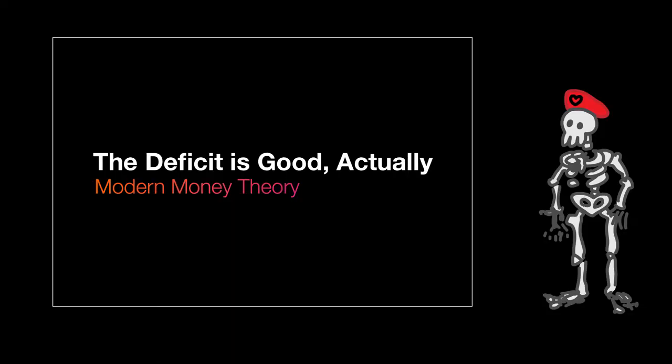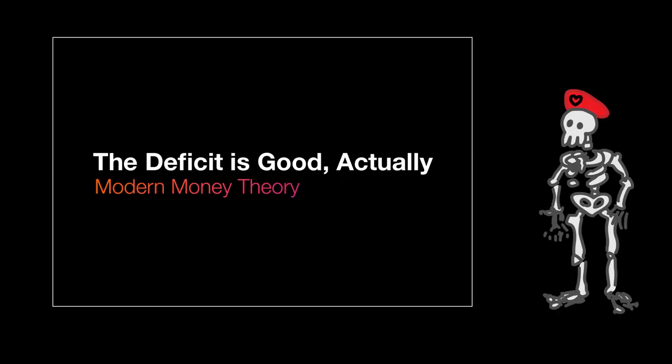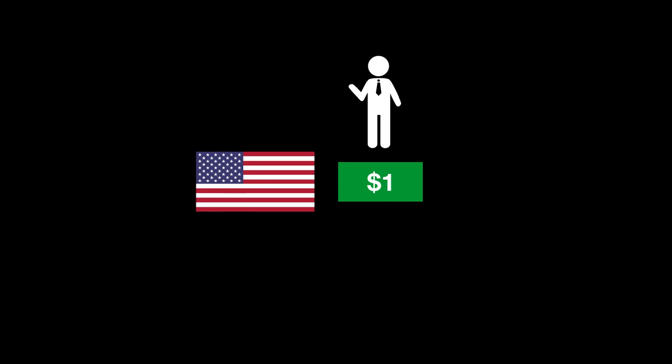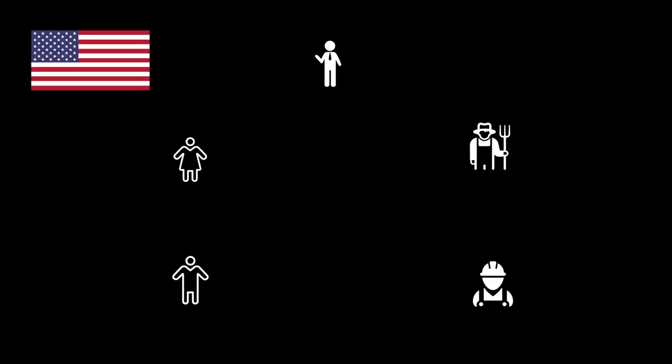So then why do we need taxes? And why does the government have debt? If we can just print all the money that we need, why bother doing either of those things? First, I'll explain why the government goes into debt. So in real life, the first thing that happens is that the federal government spends money. This money is created from nothing — it pops into existence when the federal government tells banks to mark up bank accounts. Whose bank accounts? Government contractors — companies Uncle Sam hired to build roads or teach people or build war equipment.